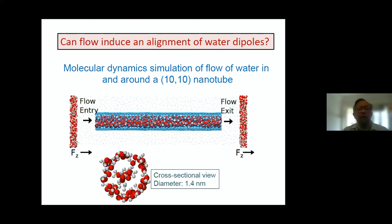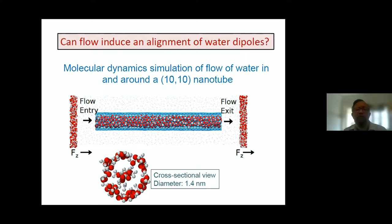We apply forces to the water molecules on the left and to the right. That way we basically generate a flow which is going from left to right. And then we want to see what happens to the dipole moments of the water molecules which are confined in the nanotube — which are passing through the nanotube. Now we have a dynamic situation: there's a flow, and water molecules are moving through this nanotube.